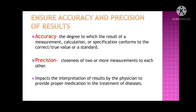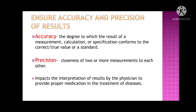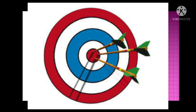Accuracy is the degree to which the result of a measurement conforms to the correct or true value. Using a dartboard as an example: when you say accurate, it is the moment you hit the bullseye. Precision is the closeness of two or more measurements to one another. When all three dart pins are close to one another inside the bullseye, that represents precision.